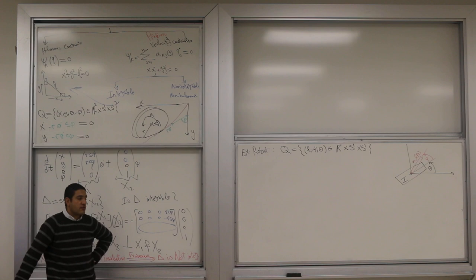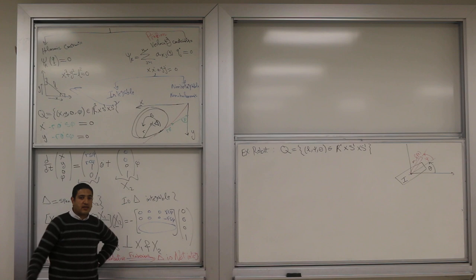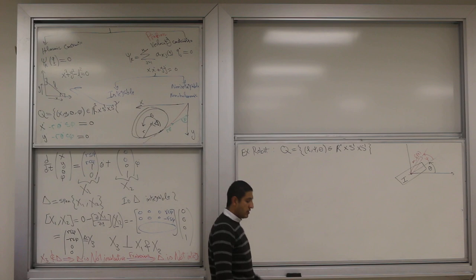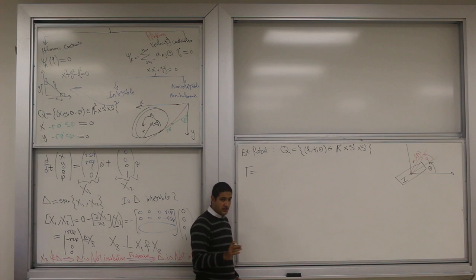So how many degrees of freedom in total? Three. Your configuration manifold is: L, epsilon, theta live in R+ cross S1 circle for epsilon, circle for theta.